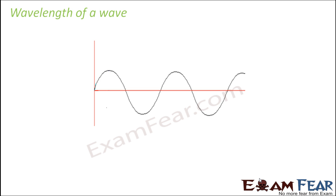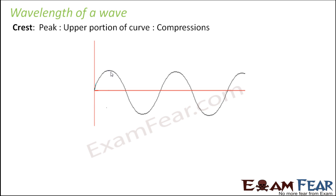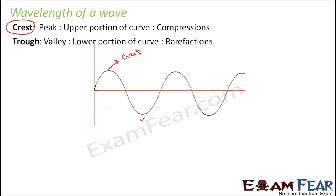The next thing we are going to talk about is the wavelength of a wave. If you look at a wave, you will see that it has an upper portion and a lower portion. This peak of the wave is termed as the crest, and the valley of the wave is known as the trough. Any wave is nothing but alternate crests and troughs. These crests are caused by compression — if you remember how the particles of the medium vibrate, there are regions of compressions and rarefactions alternately. The compression regions form the crest and the rarefaction regions form the trough.